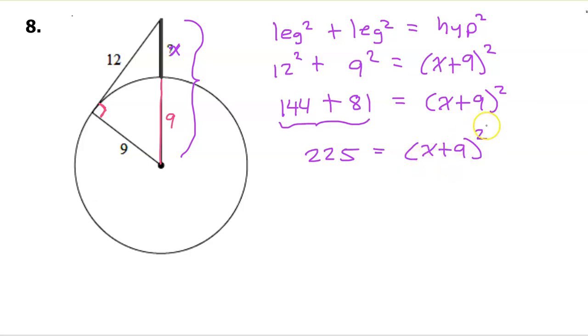So the easiest thing to do is to take the square root of both sides to unsquare this and get rid of the exponent. The square root of 225 is 15, and these will cancel out and just leave you with x+9. So to get x by itself we're just going to subtract 9 from both sides, and we quickly see that x is equal to 6.